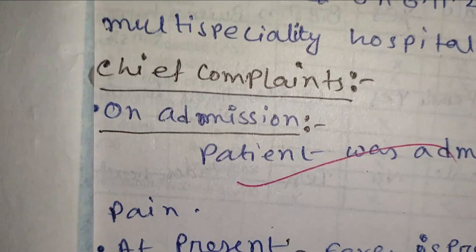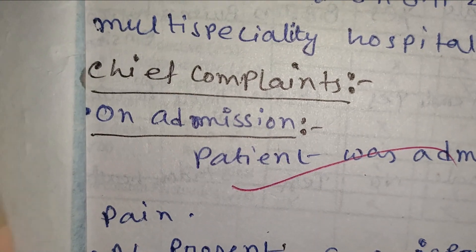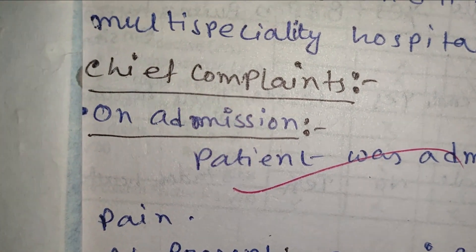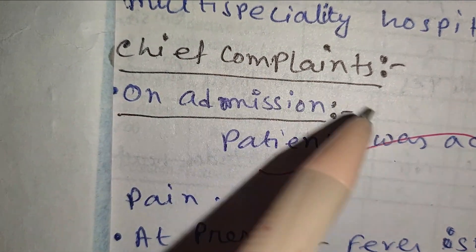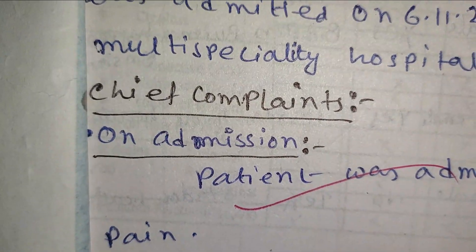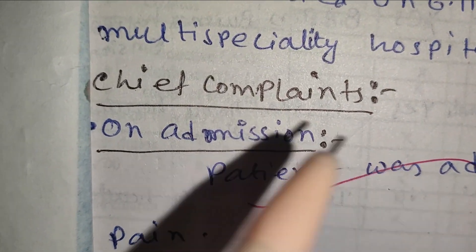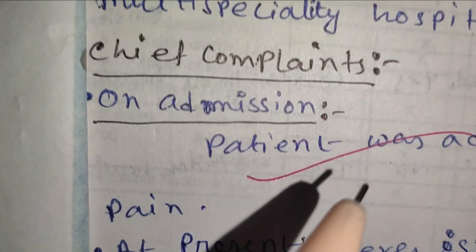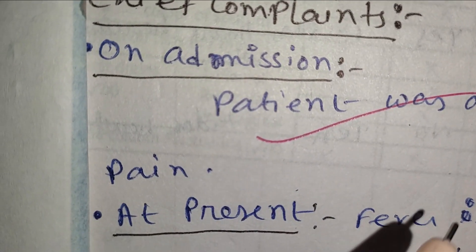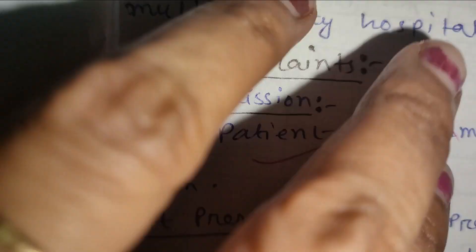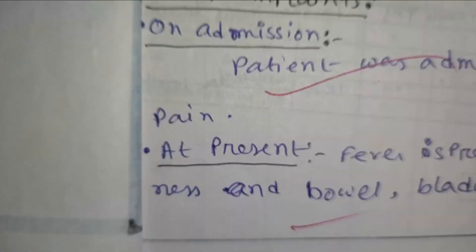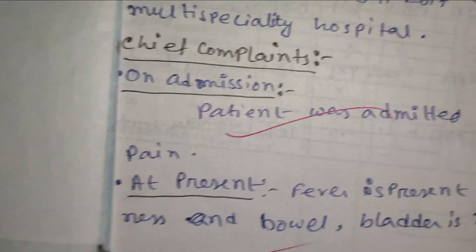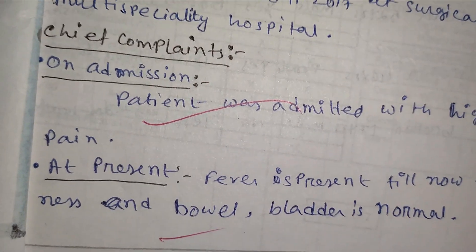After the introduction, the next point is chief complaint. We need to record the chief complaint on admission and the chief complaint at present. Chief complaint on admission is what we document, and the chief complaint of the patient at present is also included.